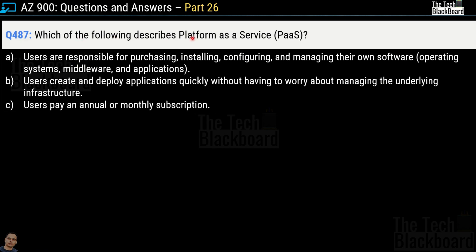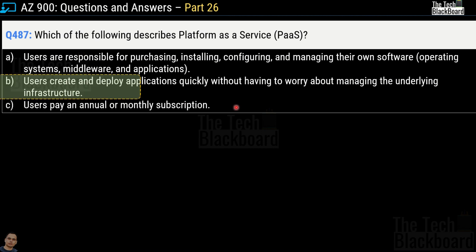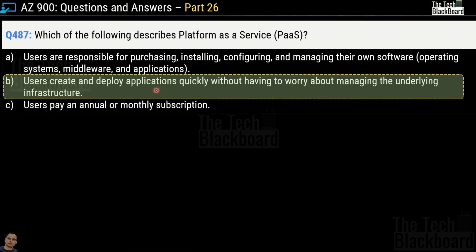Question number 487: which of the following describes the platform as a service or PaaS model? Options are: users are responsible for purchasing, installing, configuring and managing their own software; users create and deploy applications quickly without having to worry about managing the underlying infrastructure; or users pay an annual or monthly subscription. The correct answer is option B — users create and deploy applications quickly without worrying about the underlying infrastructure. That is the core essence of platform as a service.